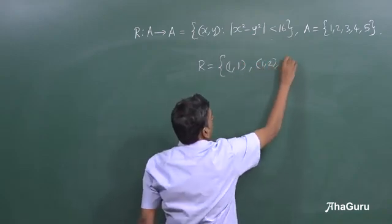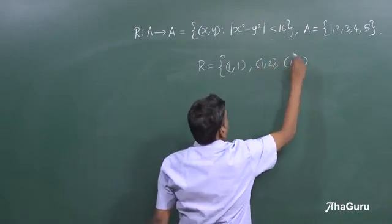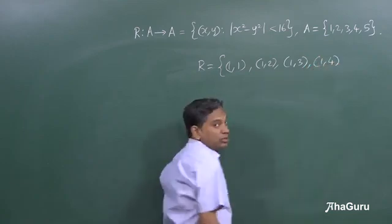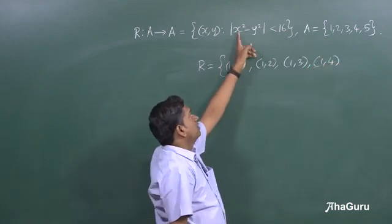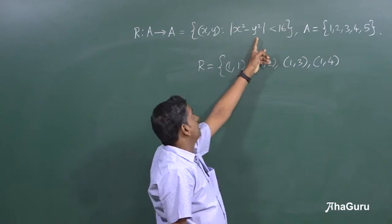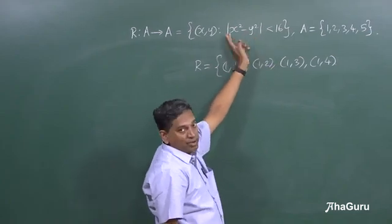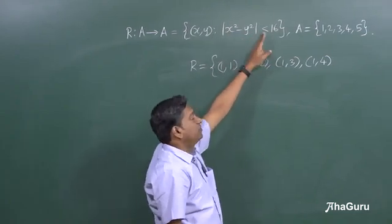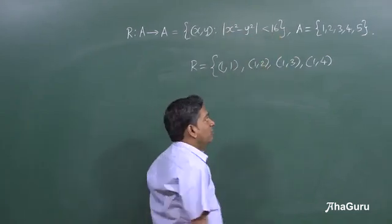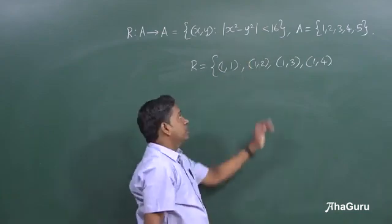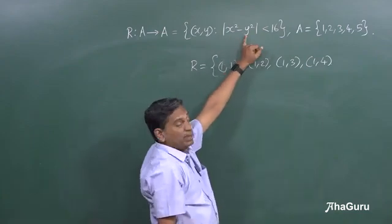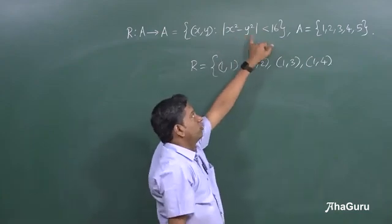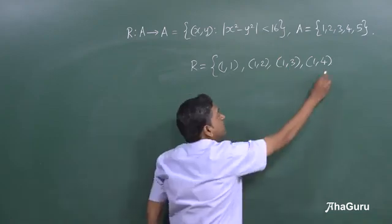1 comma 2, 1 comma 3 and 1 comma 4 will also satisfy because 16 minus 1 is or 1 minus 16, anyway you are going to take modulus is 15, 15 is less than 16, but 1 comma 5 will not satisfy because 1 minus 25 is minus 24, modulus is 24 and 24 is not less than 16.